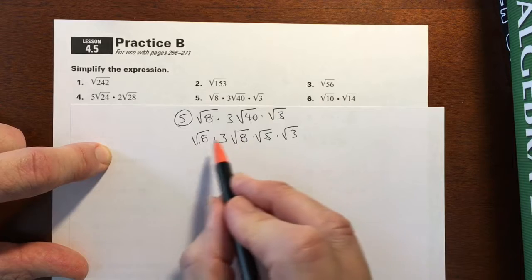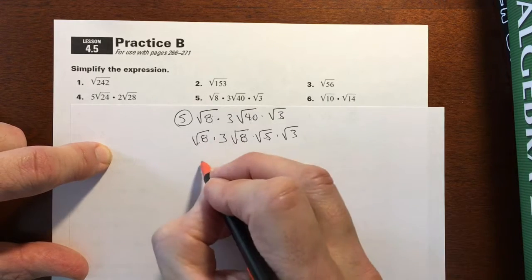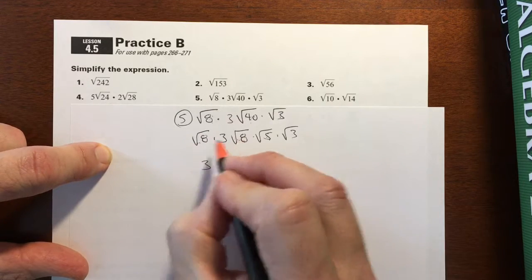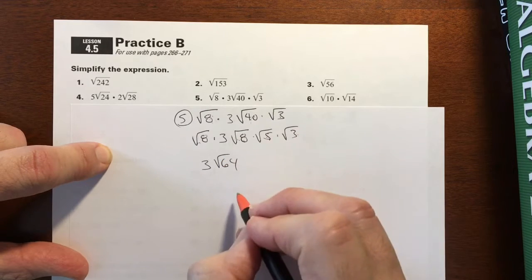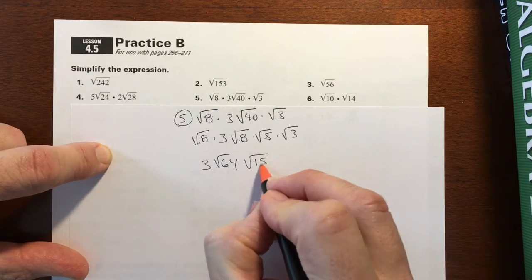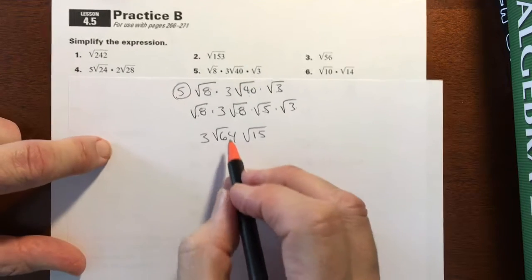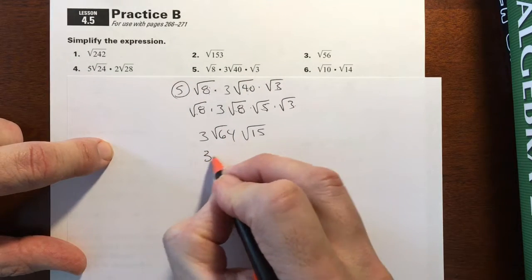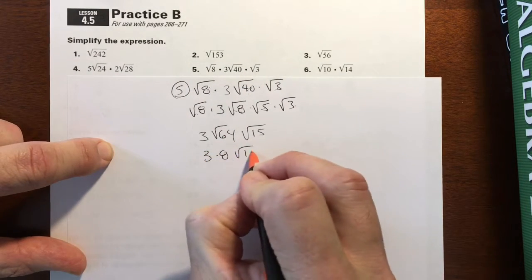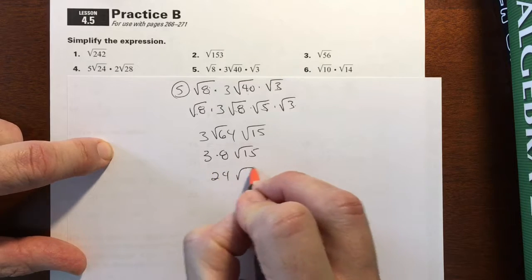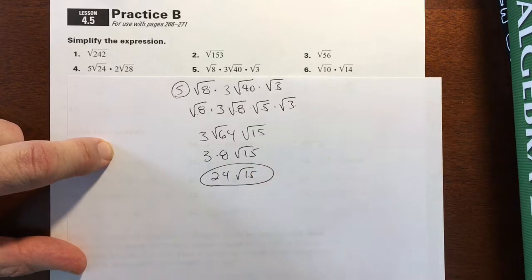Now these two will join nicely to give me, I'll put the 3 out front, square root of 64. These aren't going to go anywhere, square root of 15. And then 64, of course, it'll be 3 times 8, and it'll be 24 square roots of 15. And you're not going to do much for that.